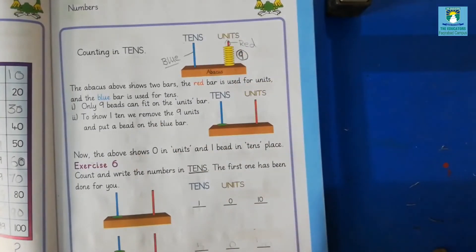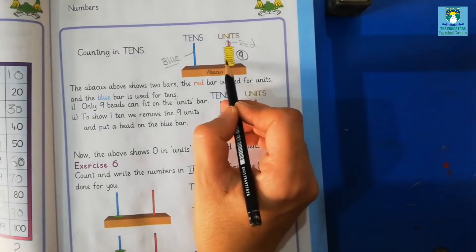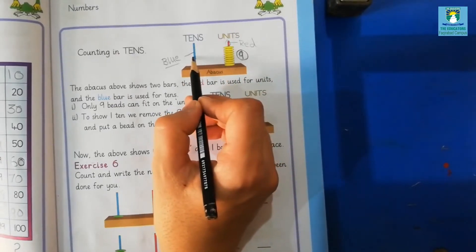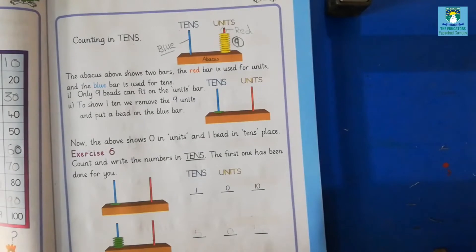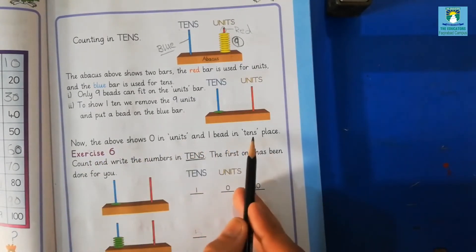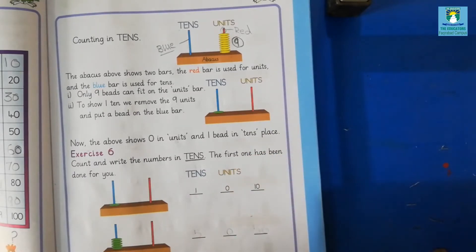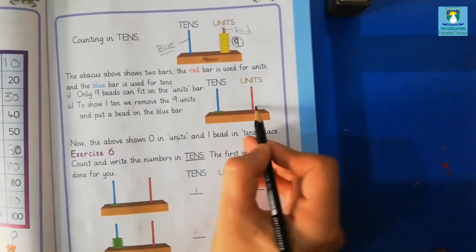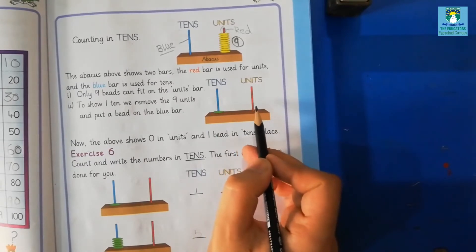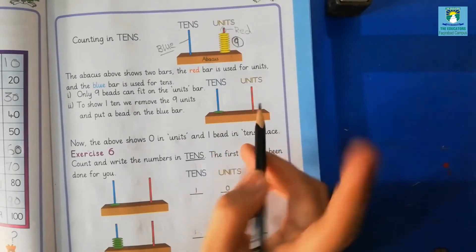And if we have to show 10, then we will remove the 9 units and put a bead on the blue bar. Now the above shows 0 in units and 1 bead in the tens place. If we have more than 9, then we will put 1 bead here in tens. And here we have only 0 — no beads in the red bar. It becomes 10.